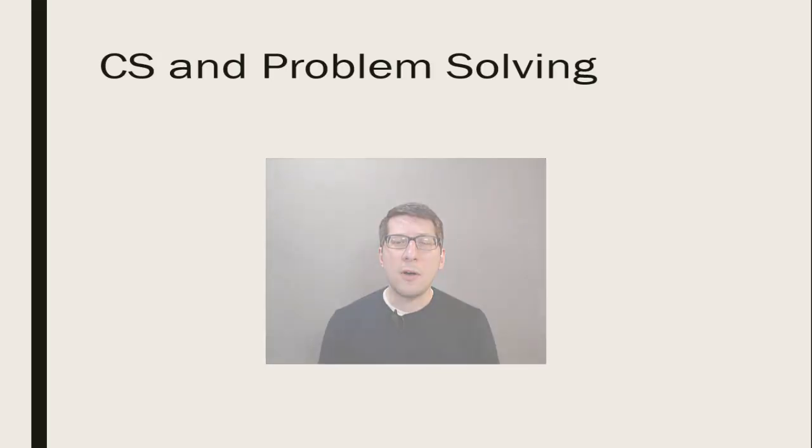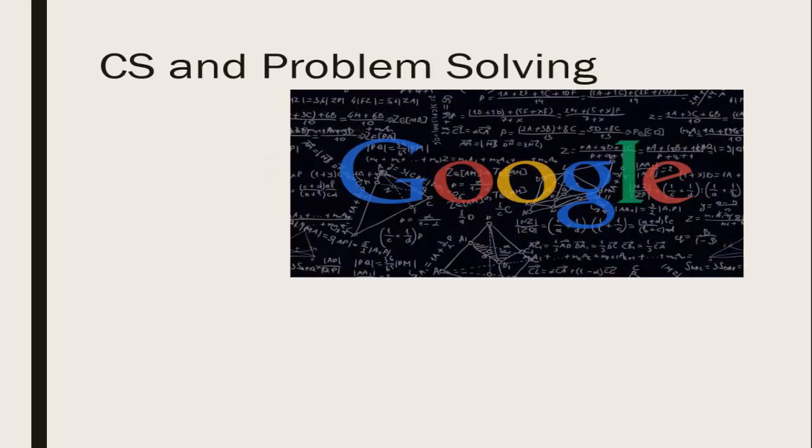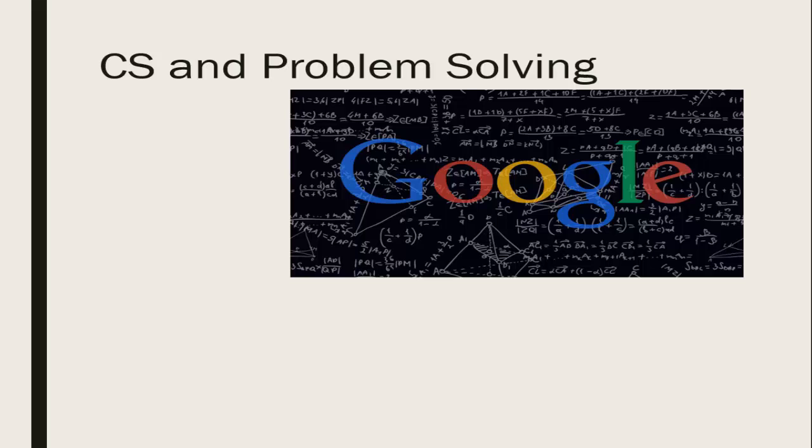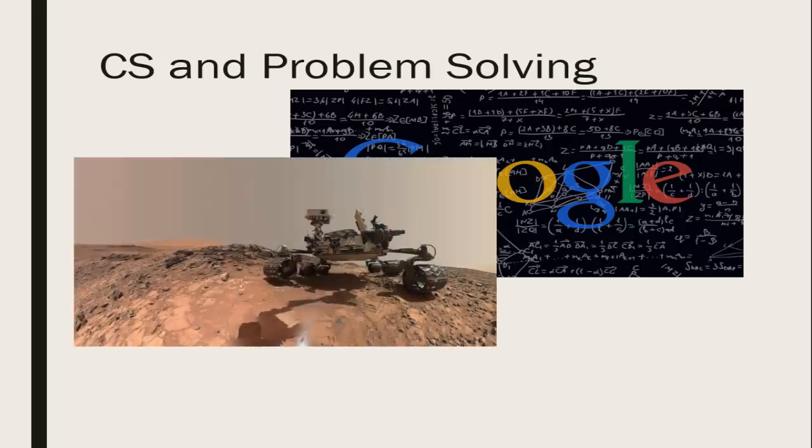What kinds of problems do computer scientists solve? One problem that Google is constantly addressing is how to best return the webpages you're looking for based on the search terms you've selected. NASA has written millions of lines of code to support their Mars exploration rover, so that it may navigate the Martian surface and communicate information back to scientists on Earth.